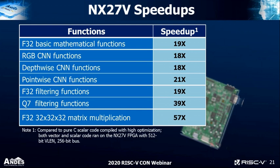Here's the speedup we're seeing today. For most applications, we're seeing about 20x acceleration from compiled C code versus hand-optimized assembly vector code. F32 basic math functions accelerate about 19x. AI/CNN functions — RGB, F32 point-wise CNN functions — get accelerated about 18 to 21 times. Floating-point filter functions see similar gains. Q7 filtering functions get accelerated 40 times. And as a highlight, 32-bit matrix multiplication can be accelerated up to almost 60 times, which is a big gain.